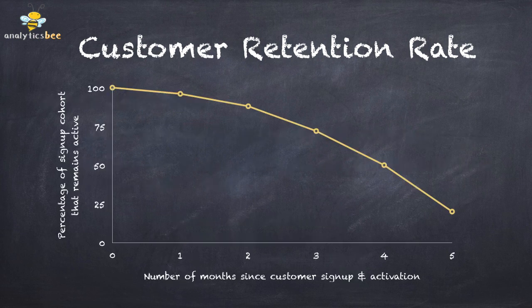Here is a toy example of the customer retention curve for a specific sign-up cohort. The horizontal axis shows the number of months since customer sign-up and activation. The vertical axis shows the percentage of customers who remain active at various points in time.